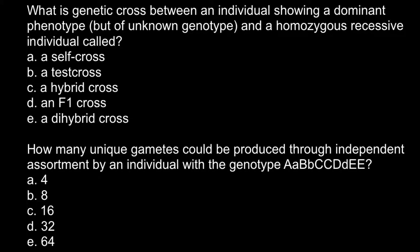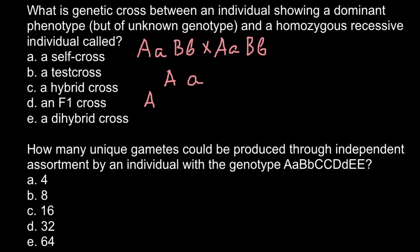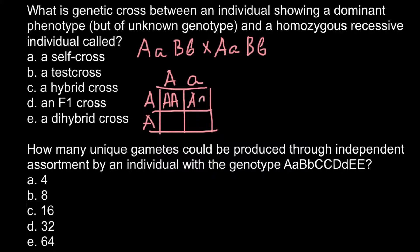Let me start with answer E, the dihybrid cross. When we have a dihybrid cross, that means we have two allelic pairs — for example, capital A and small a, and capital B and small B — and we cross with another parent that also has two alleles. As for answer D, an F1 cross: consider one parent that is heterozygous, and another that is homozygous dominant. All the genotypes produced would be considered the F1 generation.